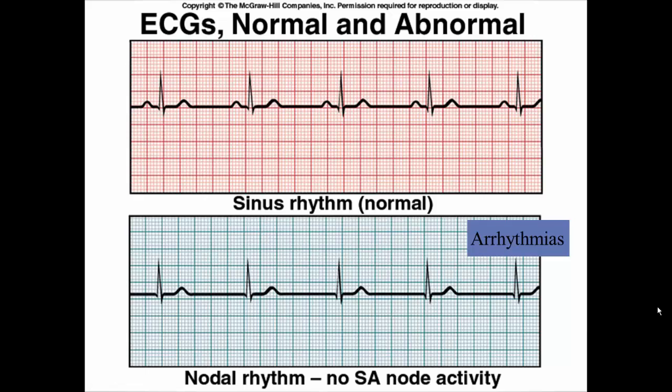The SA node is the one that spreads the action potential throughout the atriums for them to depolarize. If the SA node isn't working, the atriums don't depolarize and therefore there's no atrial contraction. When the SA node isn't working, the next auto-rhythmic cell with the fastest pace takes over — the AV node. The AV node still fires and spreads action potentials through the bundle branches and Purkinje fibers to get the ventricles to depolarize, which is why we still see a QRS and a T wave. The ventricles are contracting but not the atriums; you can live with this because gravity can move blood from the atrium to the ventricle.